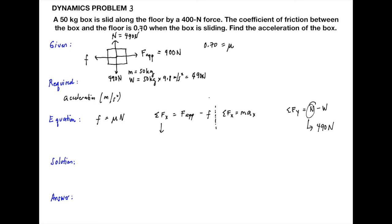We also write the sum of horizontal forces: F applied minus frictional force. The summation of Fx equals mass times horizontal acceleration, or F equals max. For the vertical direction, summation of Fy equals normal force minus weight. The important value here is the normal force, which is 490 Newton.